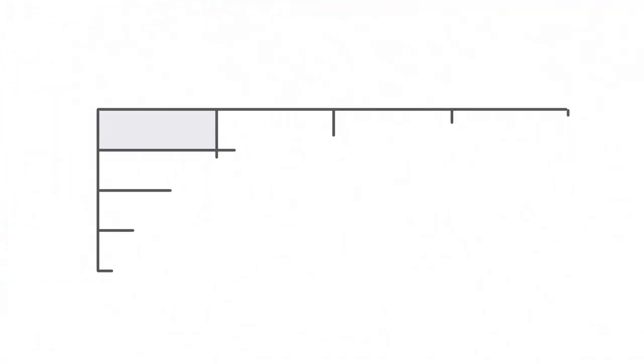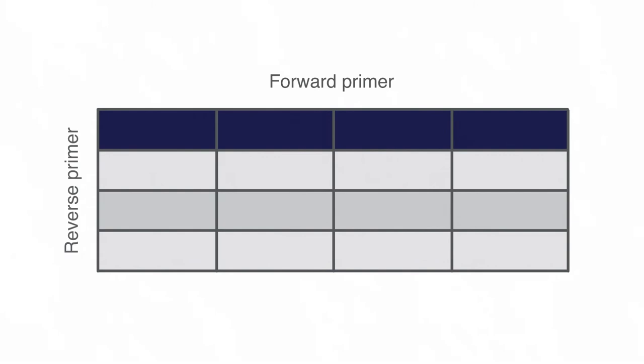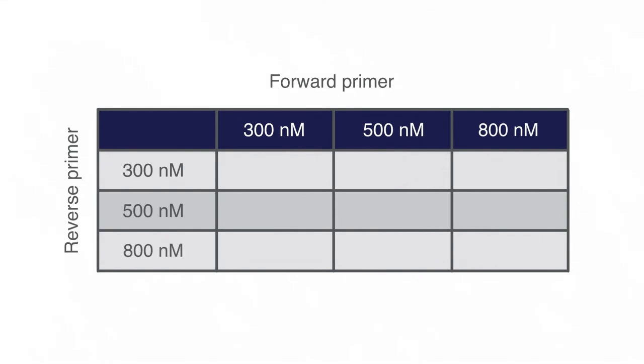For instance, Applied Biosystems PowerTrack CyberGreen Master Mix works best with primer concentrations in the range of 300 to 800 nanomoles, so all tested concentrations should fall within that range. The next step is to evaluate the CT and run a melting curve, also known as a dissociation curve, for each primer concentration combination.